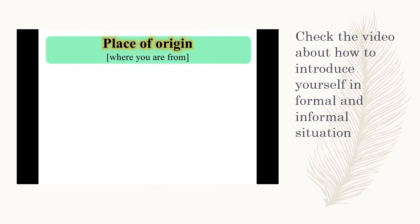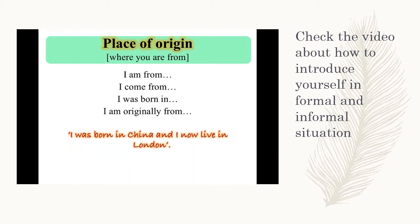Next you can introduce your place of origin, so where you are from. You can say I am from, I come from, I was born in, I am originally from. So examples of this include I was born in China and I now live in London, or I am from China.